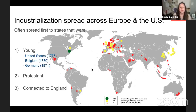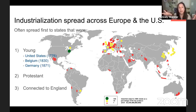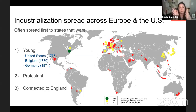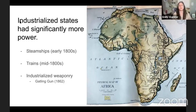Industrialization spreads across Europe and other parts of the West, often first to relatively young states — the US, Belgium, and Germany — that are building their state as industrialization is happening and adopt the newest technology. Older states like China or the Ottoman Empire have entrenched systems and change more slowly. Many of these early-industrializing states are Protestant — again, not because Protestants are better, but because that denomination emphasizes individualism and entrepreneurism — and many are culturally connected to England.